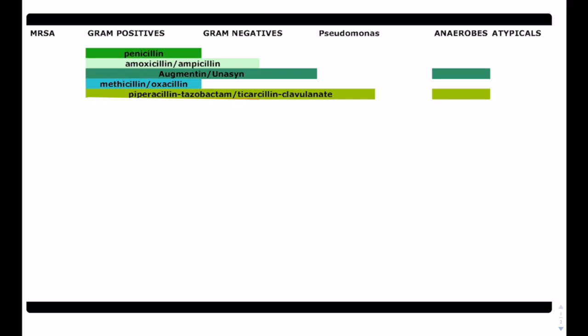Then we have this class. This is like your zosyn that's very, very commonly used in the hospital, as well as other medication, ticaricillin clavulinate. This medication covers a lot, and it's one of the few that actually cover for pseudomonas. So this covers gram positive, gram negatives, pseudomonas, and anaerobes. And so a lot of times this is used as empiric drug coverage.